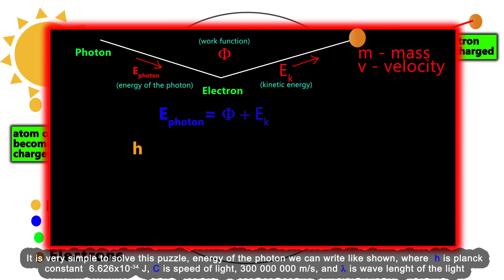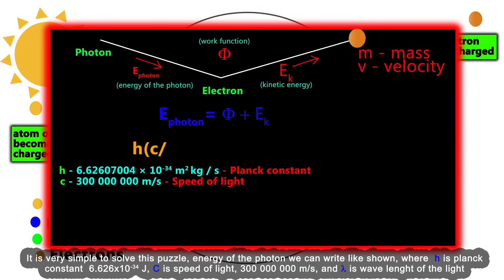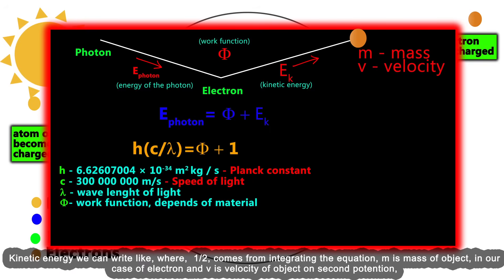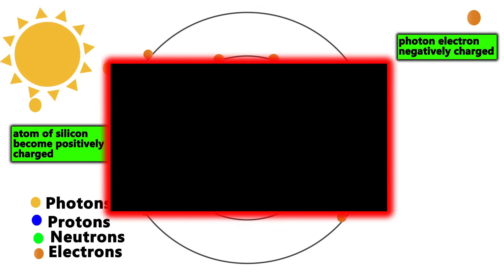Energy of the photon can be written as shown, where h is Planck constant (6.626 times 10 to the minus 34 joules), c is speed of light (300 million meters per second), and lambda is wavelength of the light. Work function depends on material—for silicon it's between 4.60 and 4.85 electron volts. Kinetic energy can be written as one-half m v squared, where m is mass of the electron and v is velocity.